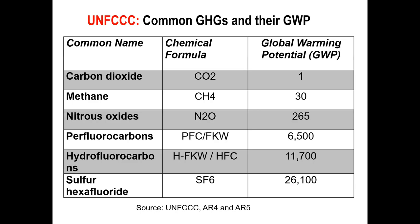The common greenhouse gases have global warming potentials. Carbon dioxide is the baseline at 1; methane is 30; and nitrogen oxide is 265. You need these global warming potentials when calculating emissions, because they are all converted to carbon dioxide equivalent — CO2e — which is another term. So one ton of methane gives us about 30 tons of carbon dioxide equivalent, and one ton of nitrogen gives us 265. These are very critical factors when doing carbon trade, because you do not trade as methane or nitrogen dioxide — you trade at the baseline of carbon dioxide equivalent.